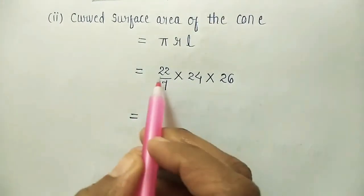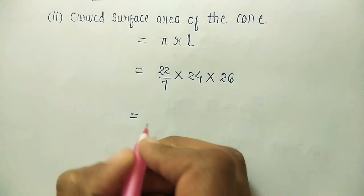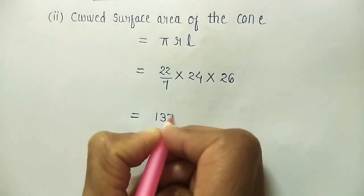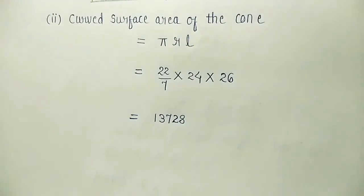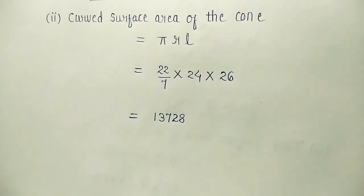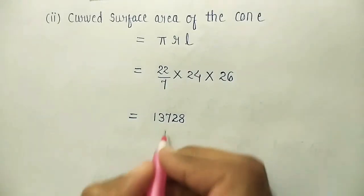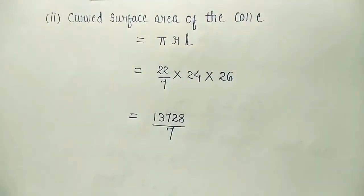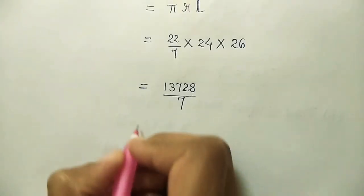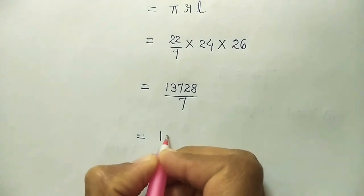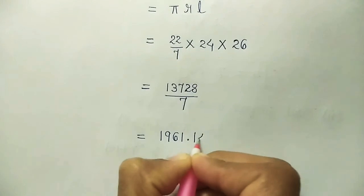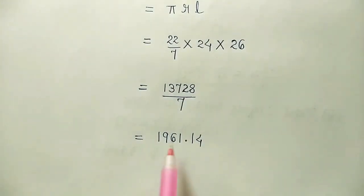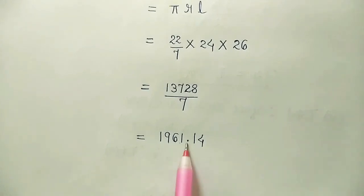Now multiplication of 22, 24 and 26 that is 13,728. It is 13,728 and denominator is 7. And answer for this you will get as 1961.14.